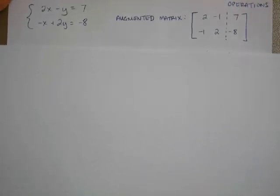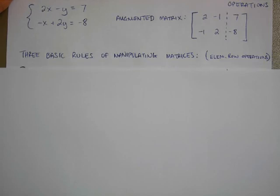There are 3 of them. 3 basic rules of manipulating matrices. And the first one goes like this. I can interchange any 2 rows. Now, this is a silly one right now, but this is the one that might help you later on if you're doing like 3 variables at a time.